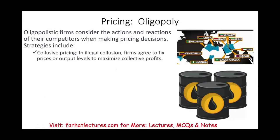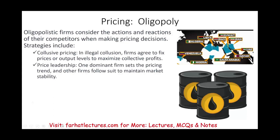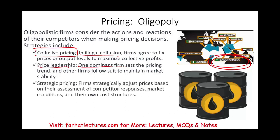The firms consider the action and reaction of their competitors when pricing — they cannot just freely increase or reduce prices without political consequences. Sometimes what you have is collusive pricing: in a legal collusion, firms agree to fix prices or output levels to maximize collective profit. You would hear in the news that OPEC met and decided to cut output by three million barrels per day — they can do that. Price leadership is another strategy where one dominant firm sets the pricing trend and others follow. For example, in OPEC, if Saudi Arabia cuts their output, the rest would follow, and if they increase, the rest would follow — it gives them the signal.